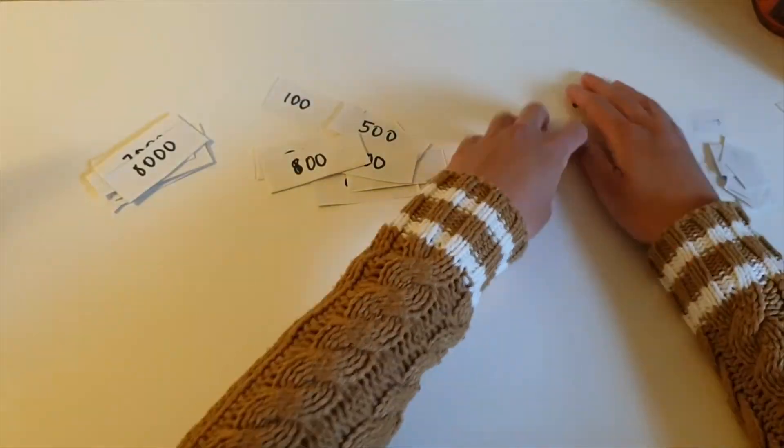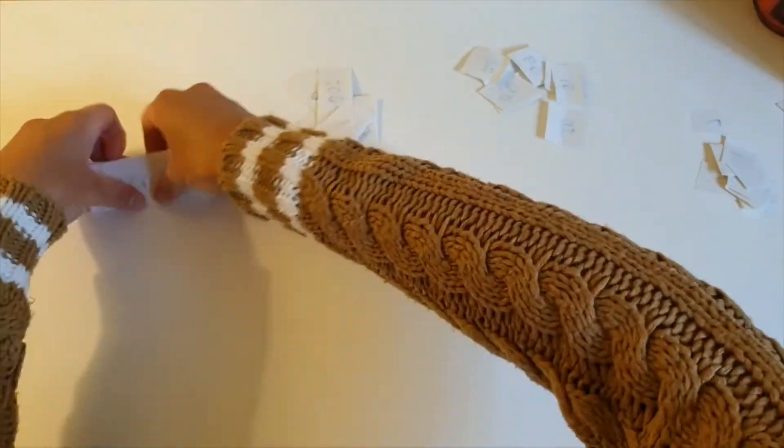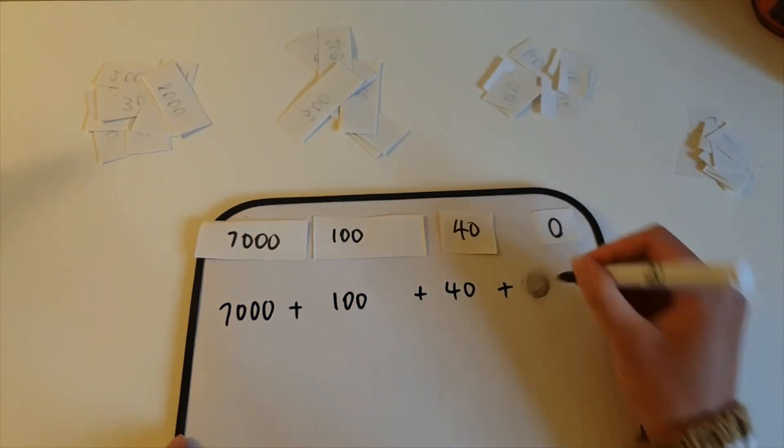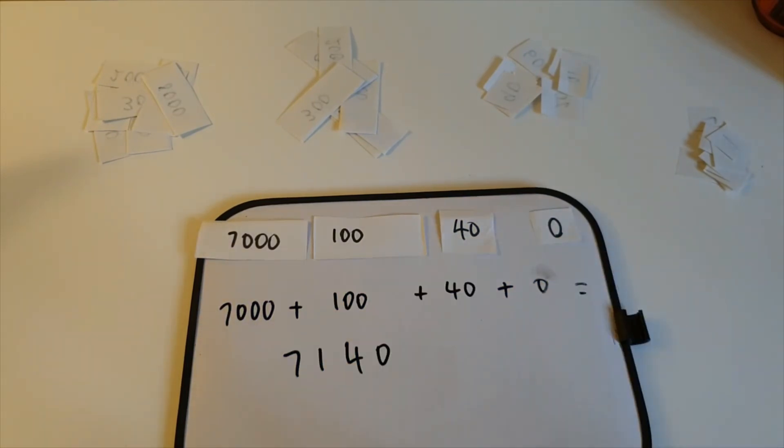Sort them into piles of the different multiples and children can then ask their friend to choose a card from each deck. As each number has different digits and has been partitioned, children must use their knowledge of the expanded form and write the number this makes.